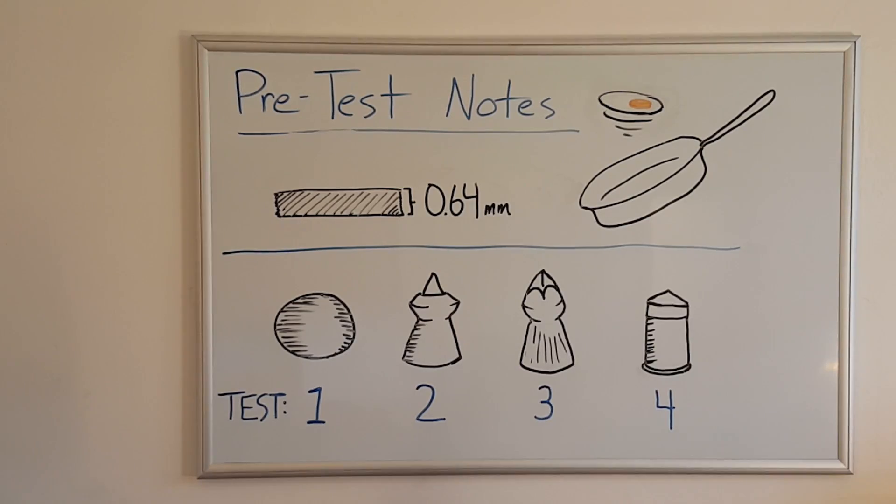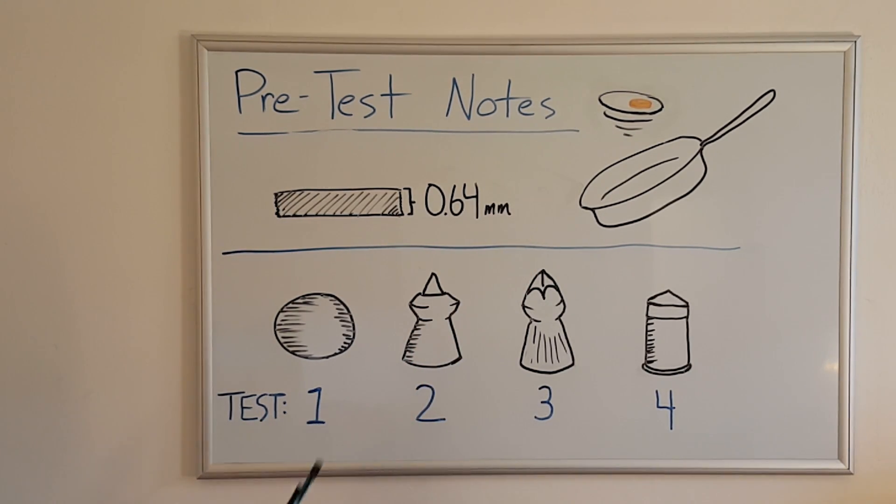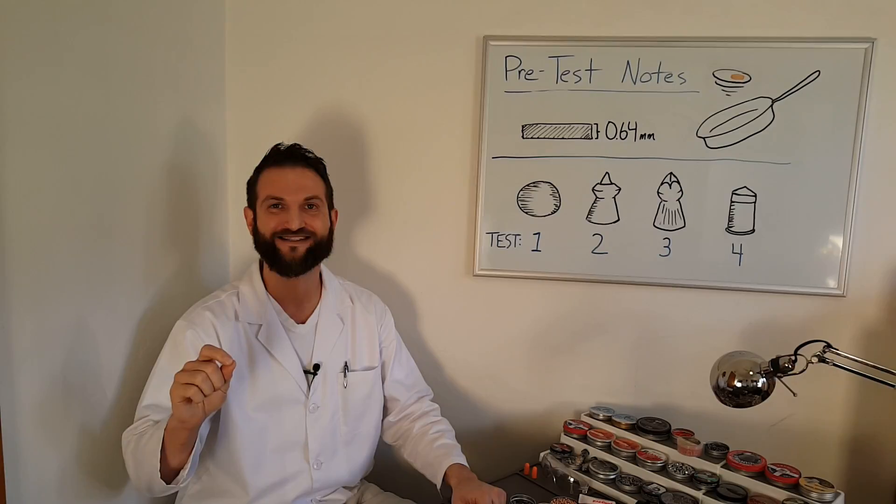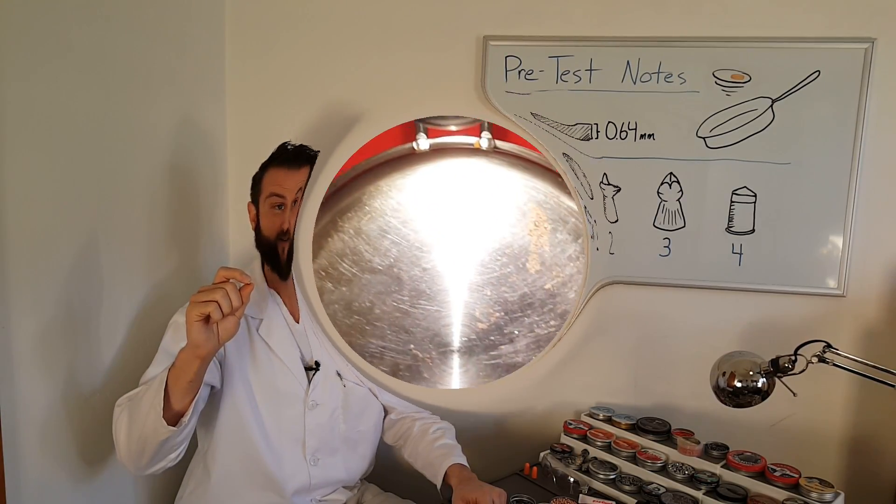These will be fired into a small frying pan, which is .64 mm thick, and appears to be made of stainless steel. Will any of these puny pellets make it through the steel frying pan? Let's go find out.